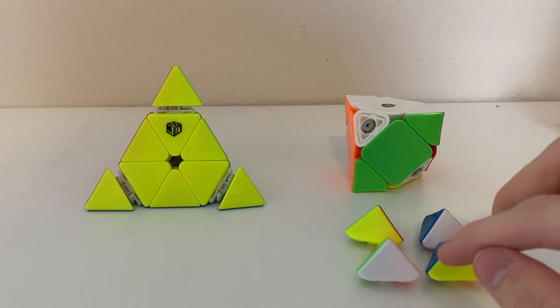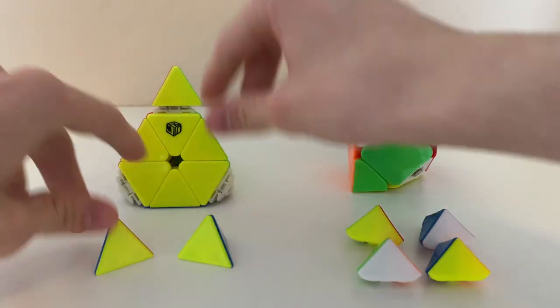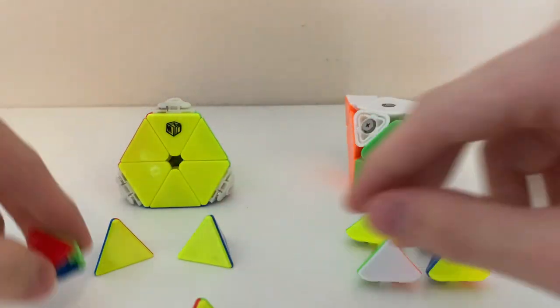A skewb without its extra corners actually functions identically to pyraminx if we take off its tips. So that raises the question, can we solve a skewb like a pyraminx?